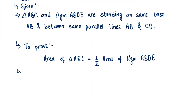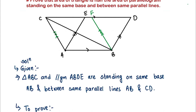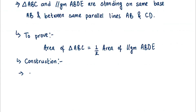In the third part, we write the construction since we have done one in our figure. We drew a line BF parallel to AC. So the construction is: draw BF parallel to AC.